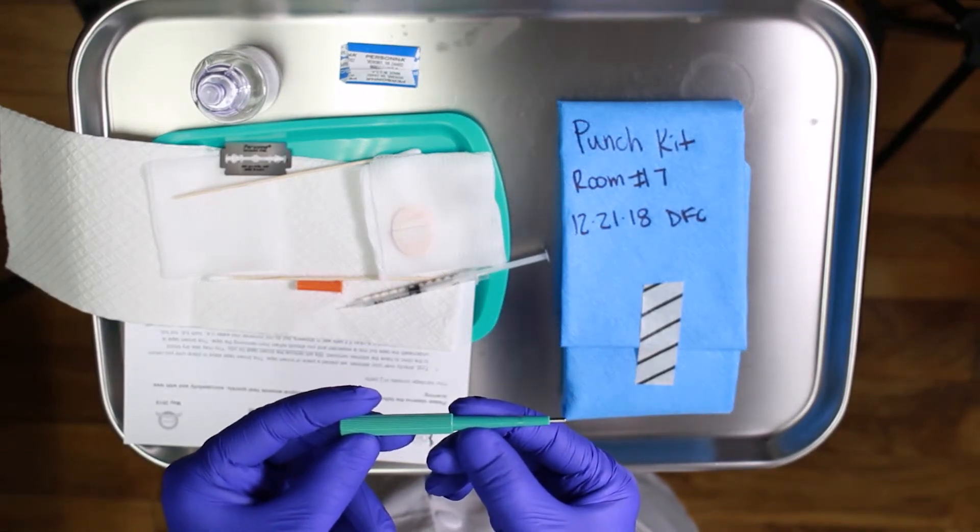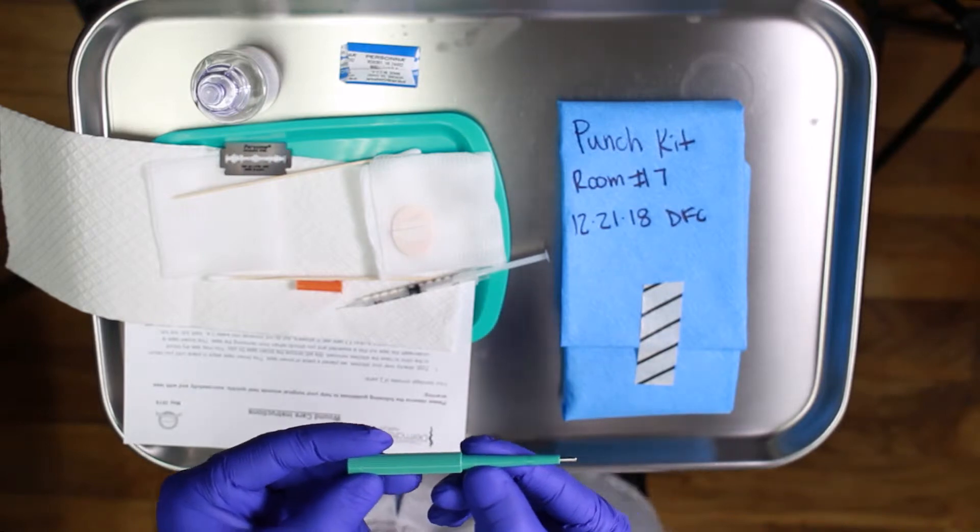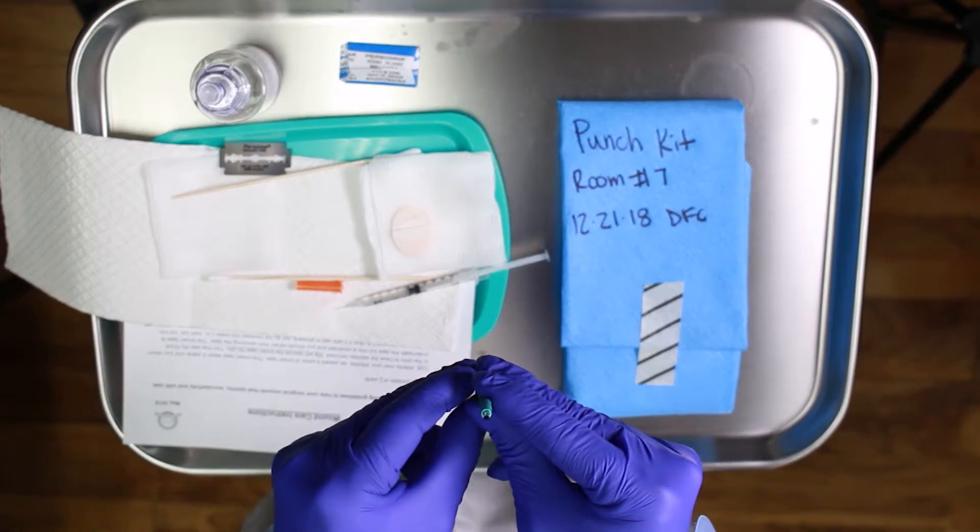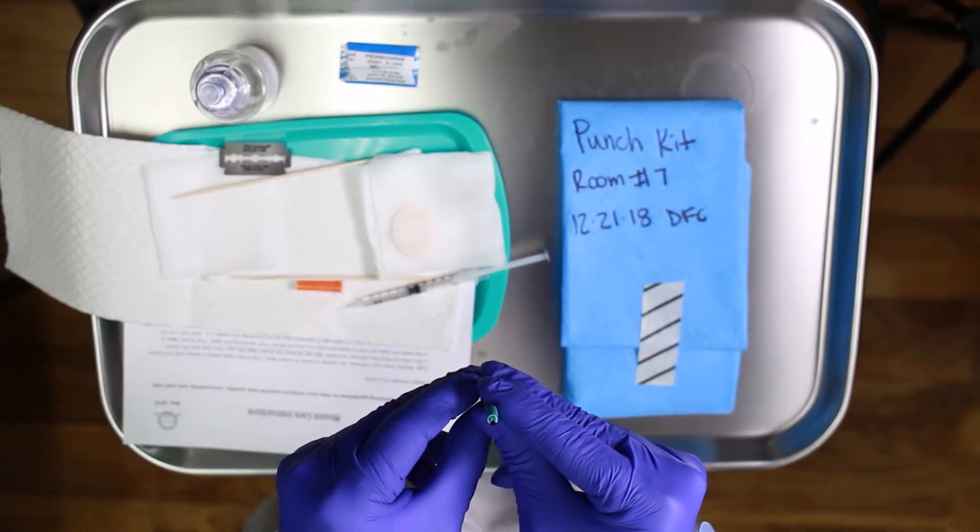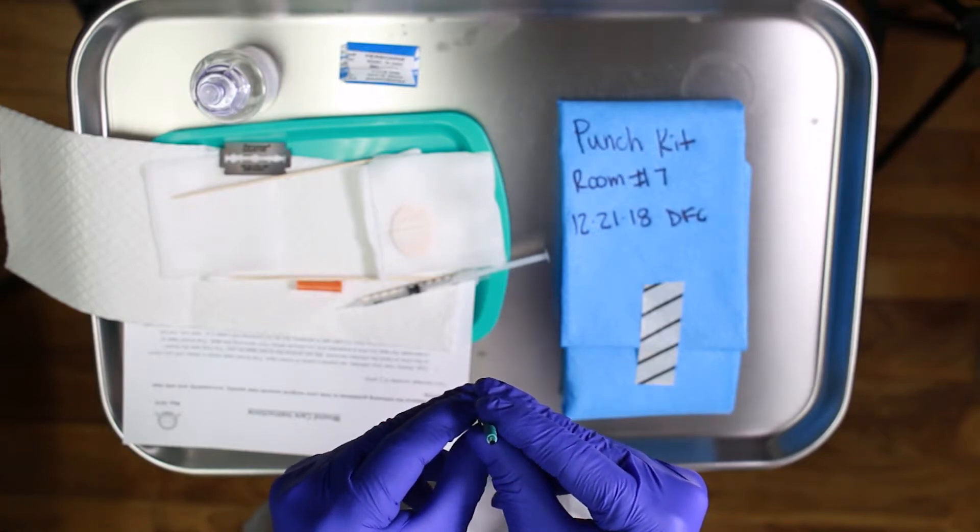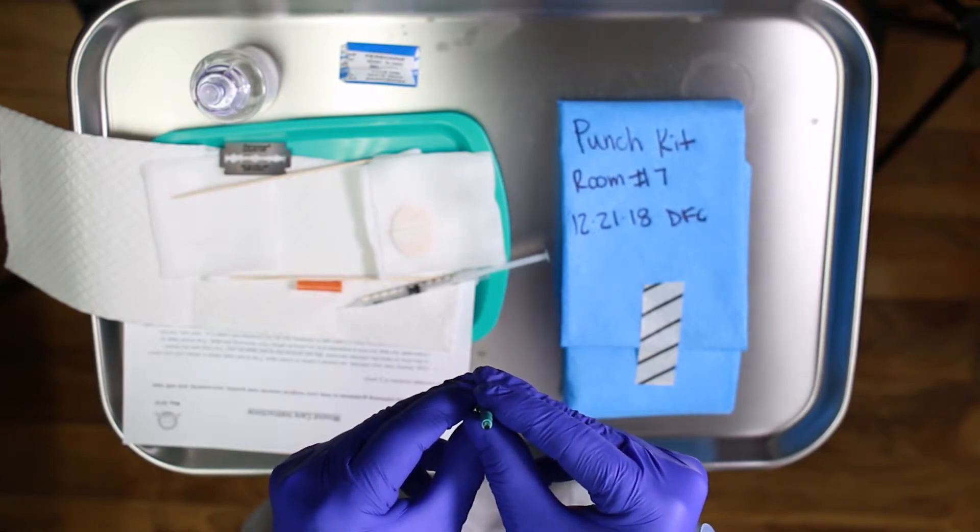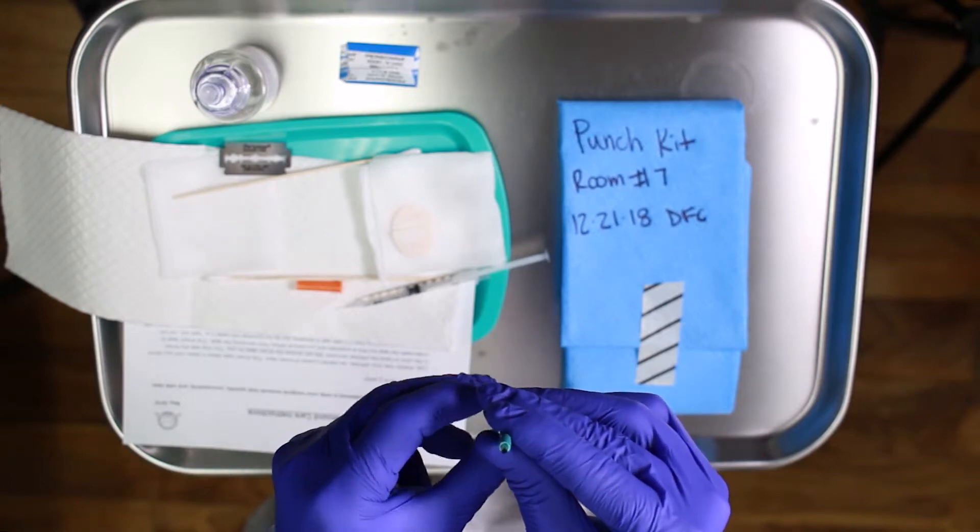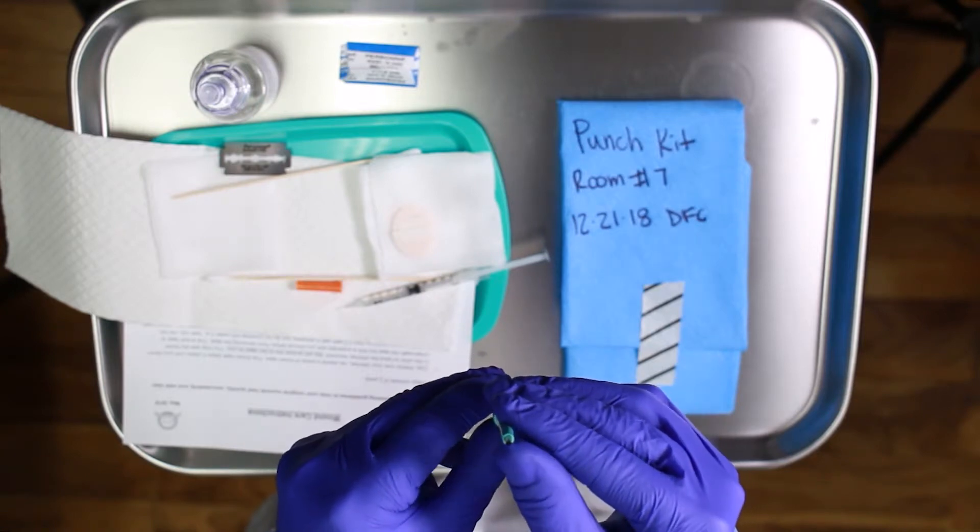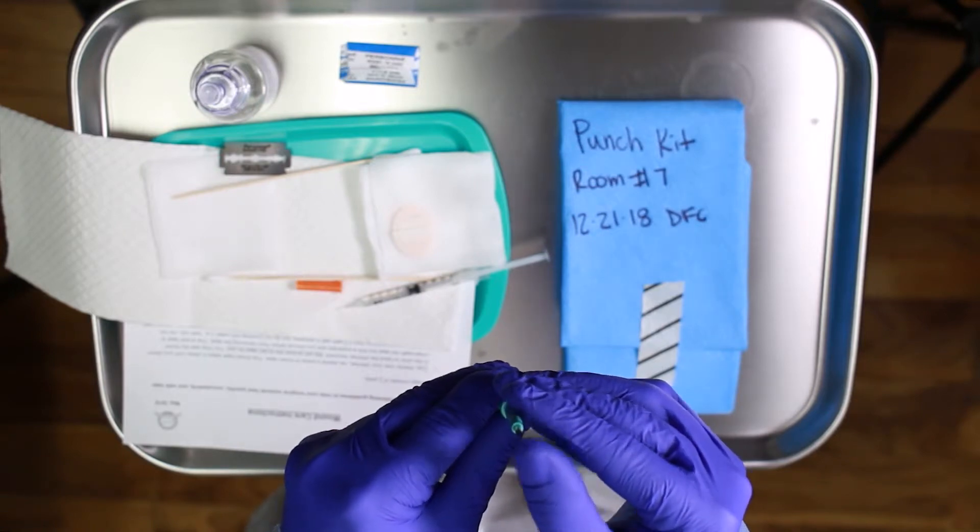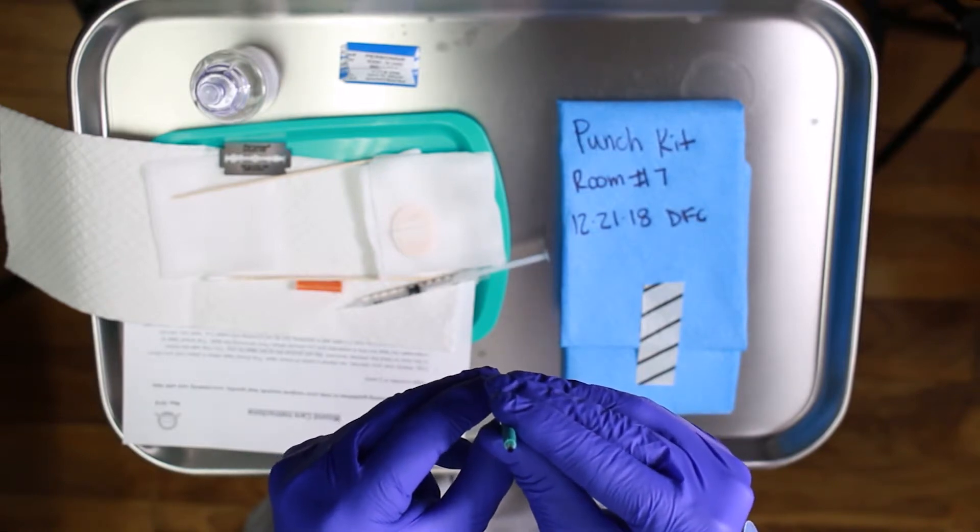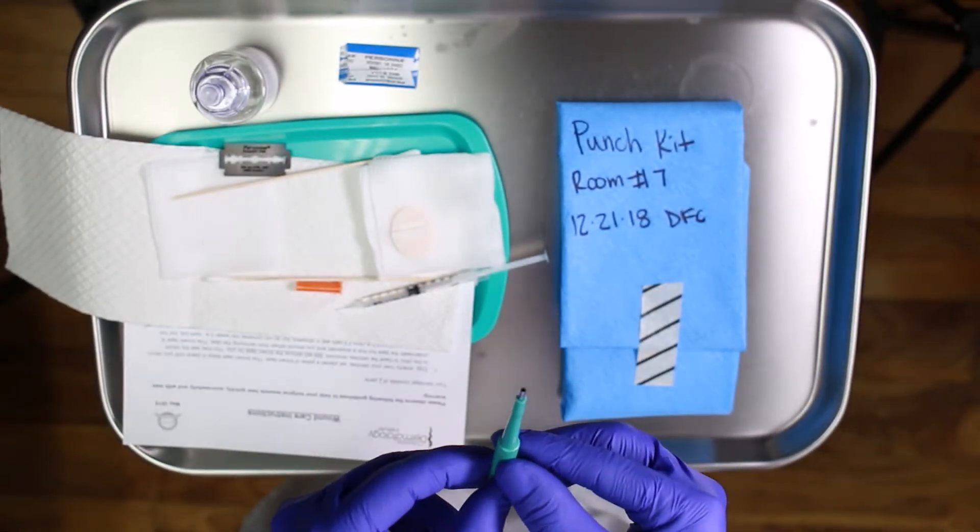Probably the most common punch we use is a three. The reason we use a three is you can see this is like a little cookie cutter device. A three is just enough tissue usually for the pathologist to read. A two is a little bit small. A two would be used for a tiny little mole where you just want to punch it out. The way this tool is used is I'm rotating it. It doesn't matter, you do a clockwise counterclockwise, you want to stay even. And you can see that basically this whole hub right here, we want to bury or get to the level that we want to get the specimen.